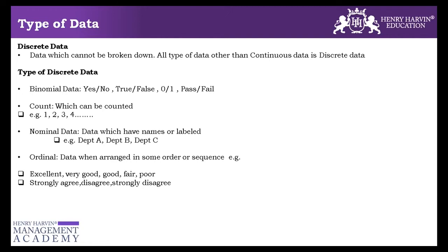So the difference between nominal and ordinal: nominal could be in any sort of way, like department. If I'm comparing department A, department B, department C, it could be in any order, but ordinal is when it's arranged in a certain sequence. So that's the difference between nominal data and ordinal data. This is also discrete.